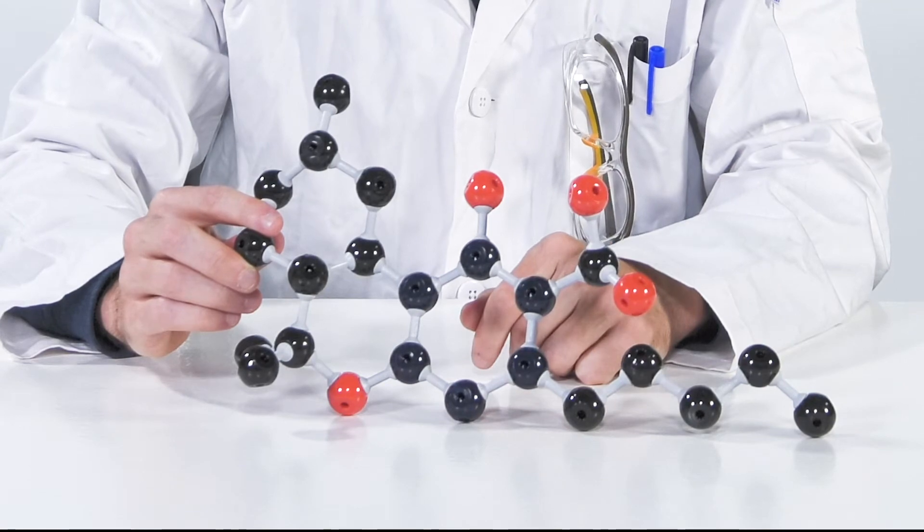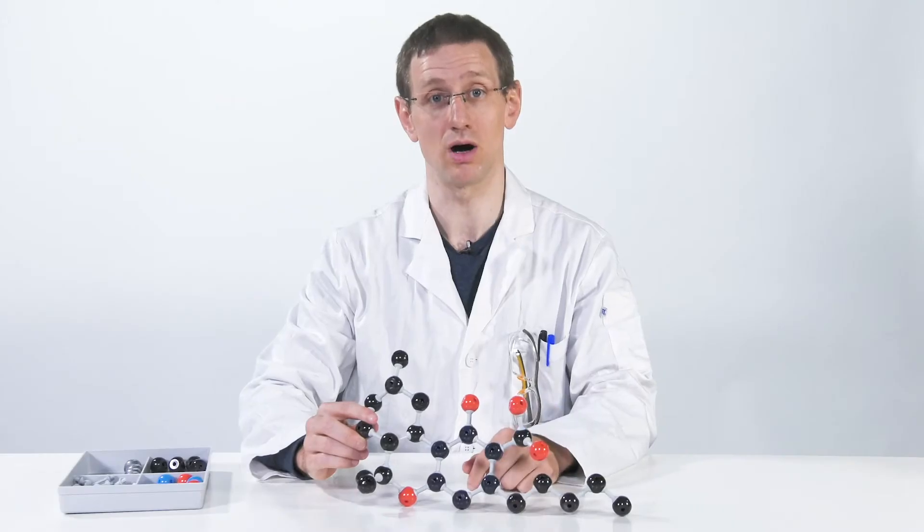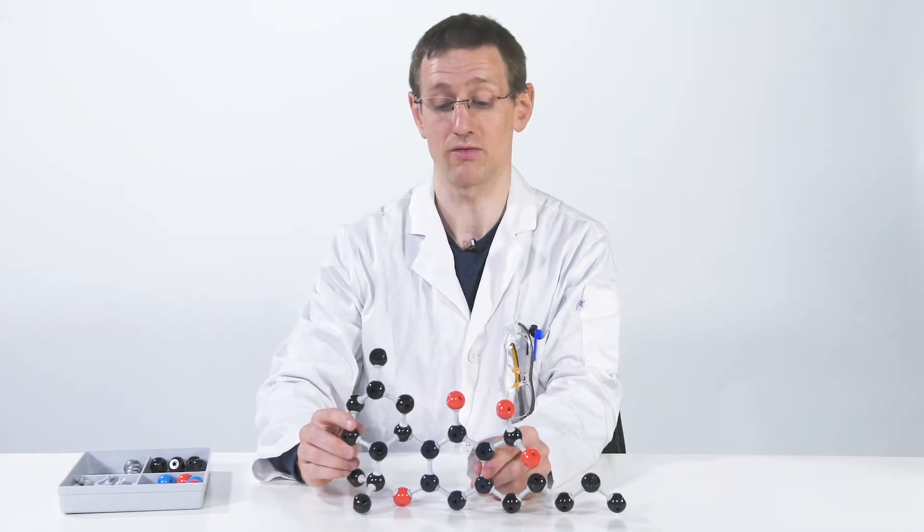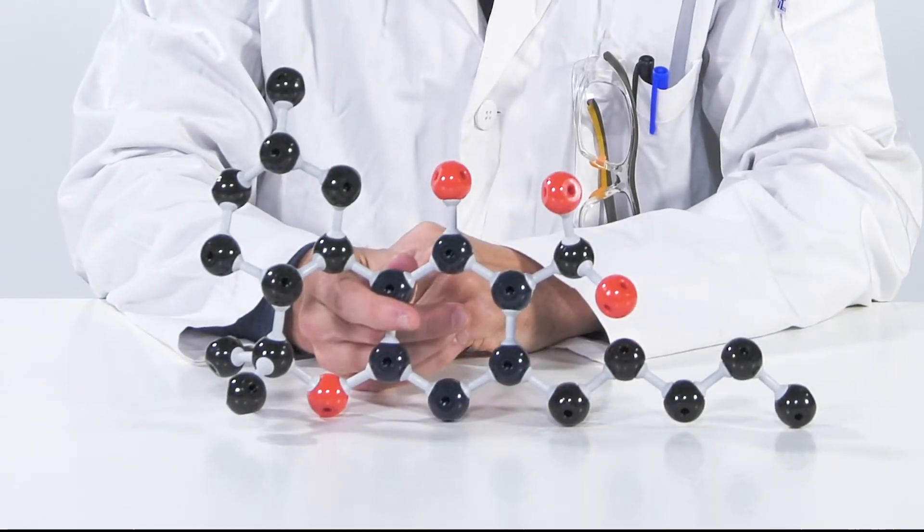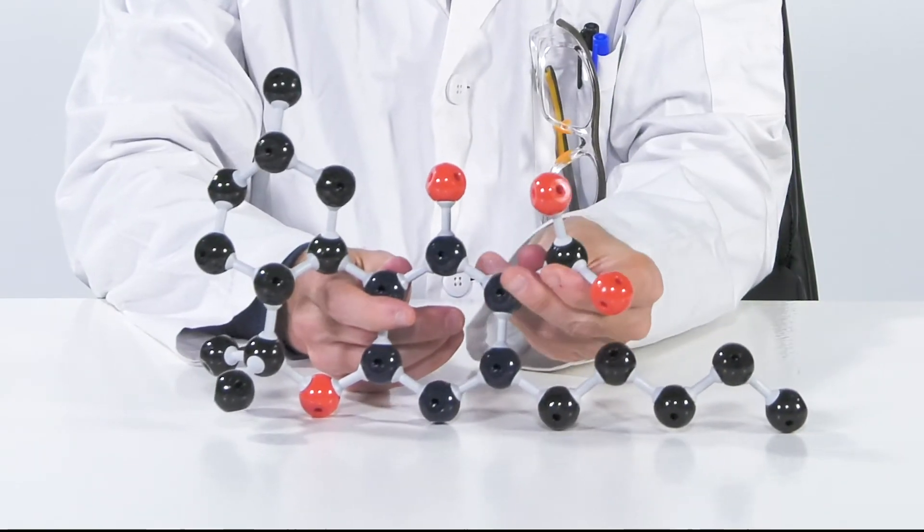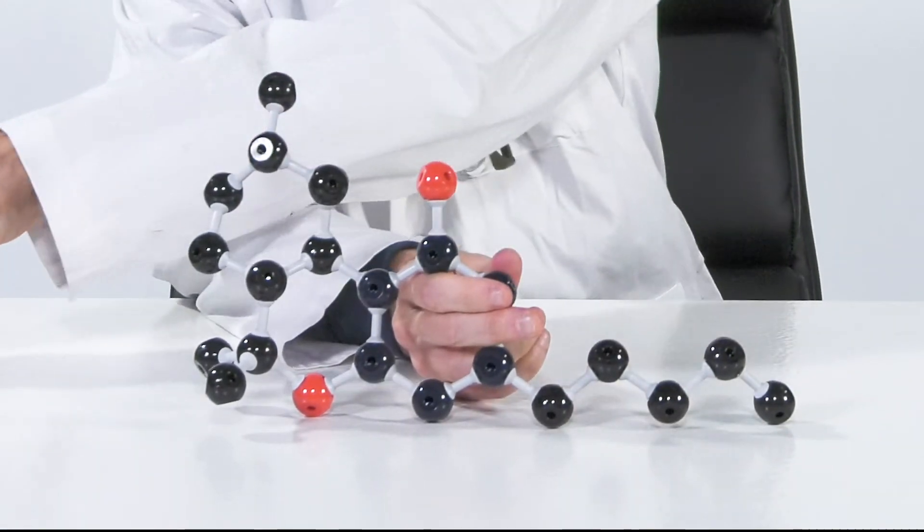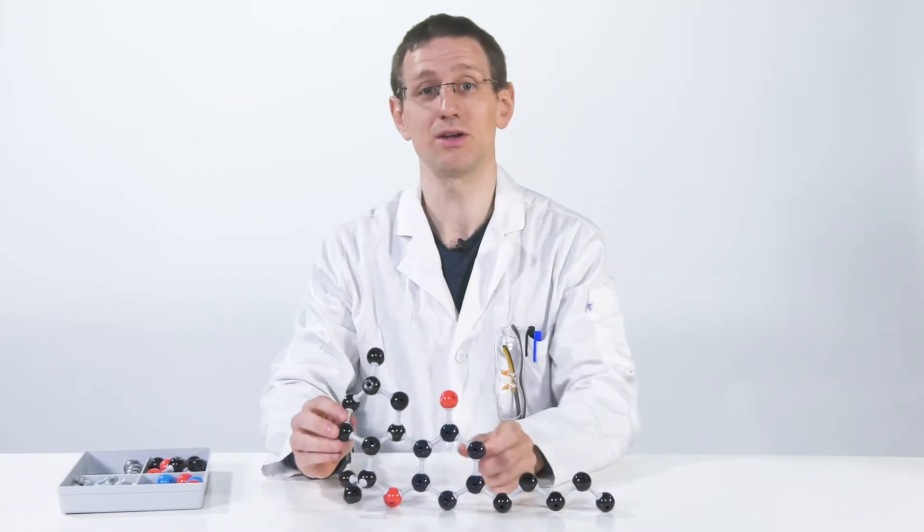THC acid is naturally occurring in a cannabis plant, but it won't make you high. To have the intoxicating effect, you need to decarboxylate with heat. So upon baking or smoking, this acid group will fall off, and you make THC.